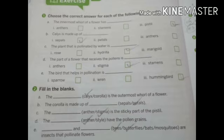Number A: The innermost whorl of a flower has - Answer is Pistil. Number B: Calyx is made up of - Answer is Sepals. Number C: The plant that is pollinated by water is Hydrilla.